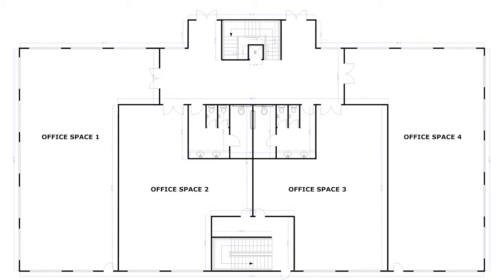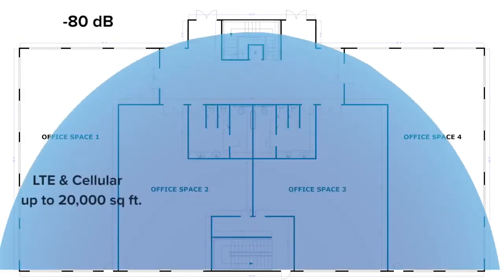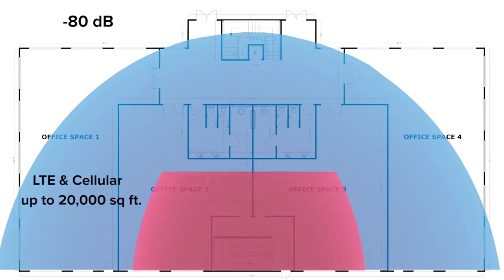Higher frequency ranges are weaker than lower frequency ranges — the higher you get, the weaker the signal. For example, an incoming signal of -80 dB could provide enough coverage for up to 20,000 square feet on the LTE and cellular bands, but only up to 8,000 square feet on the AWS and PCS bands.